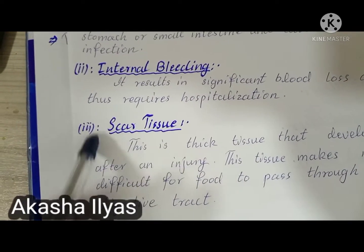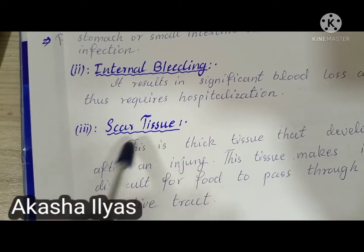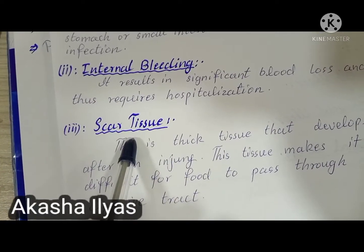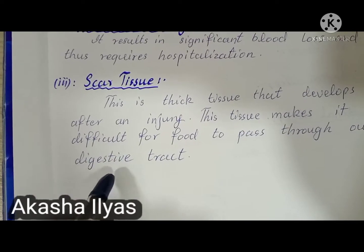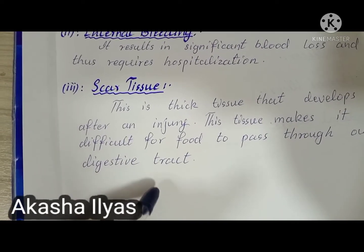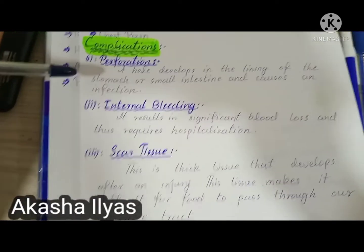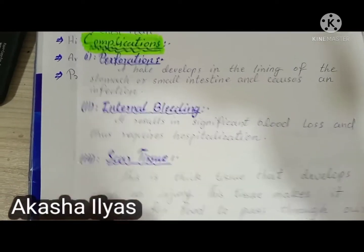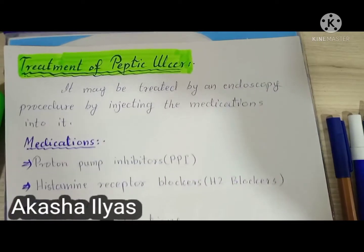A cluster of scar tissue forms due to injury, causing difficulty in food passage through the digestive tract and resulting in pain. These are the three main complications of peptic ulcers: perforation, internal bleeding, and scar tissue.